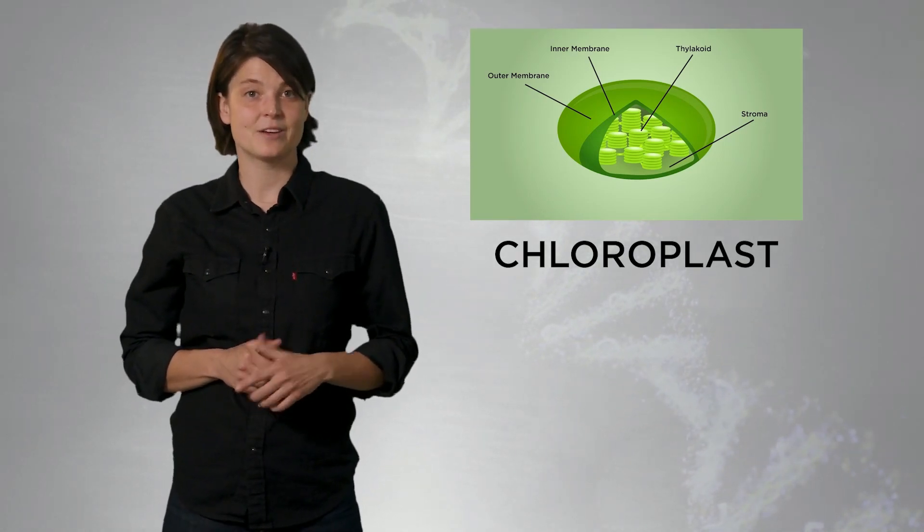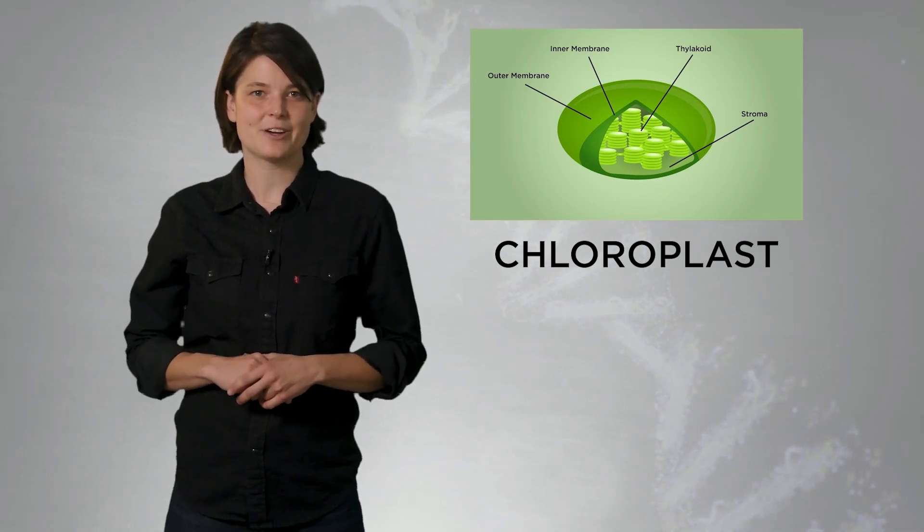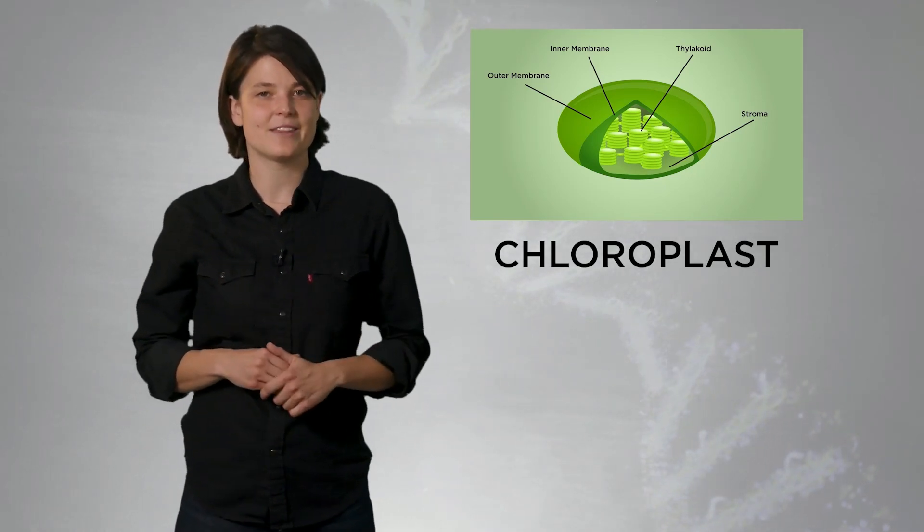Chloroplasts contain a green pigment, chlorophyll, which absorbs light and is what gives leaves their green color, since that is the only part of the light that gets reflected.